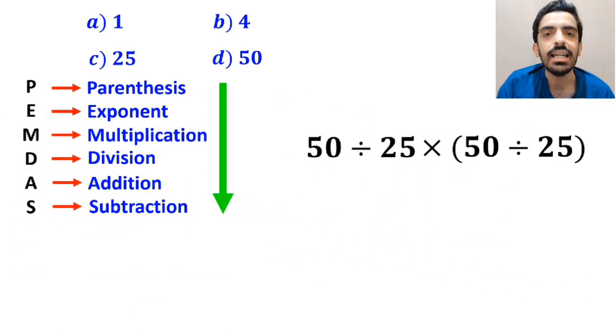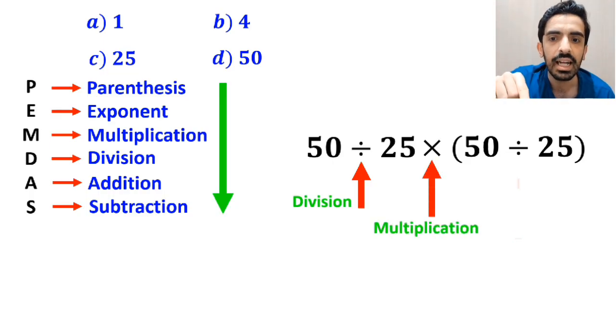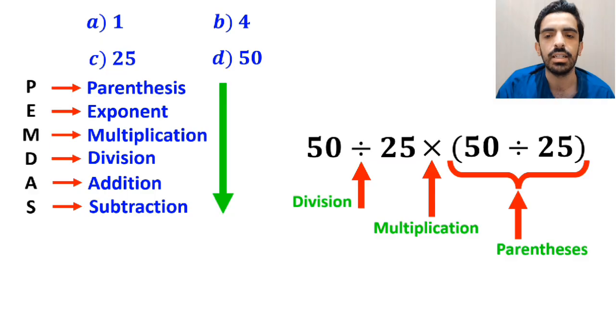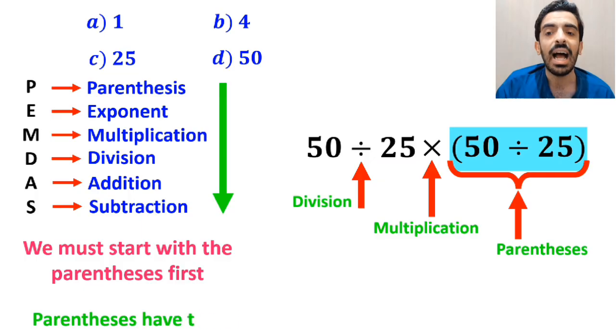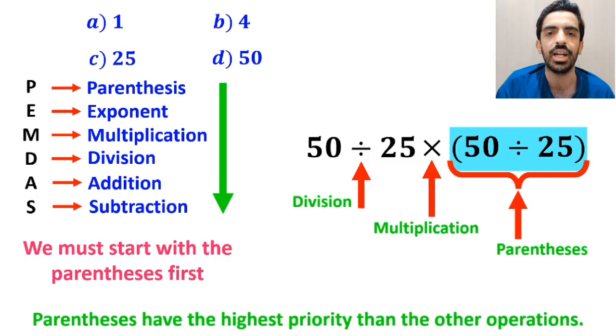As you can see on the screen, in this expression, first we have a division sign, then a multiplication sign, and finally parenthesis. According to the PEMDAS rule, we must start with the parenthesis first, because parenthesis have the highest priority compared to the other operations.